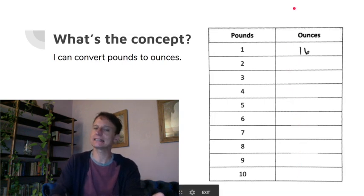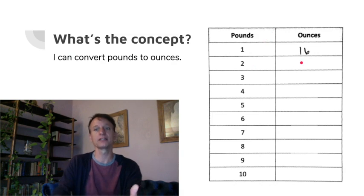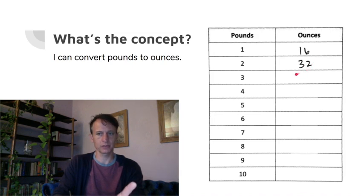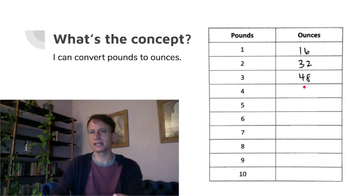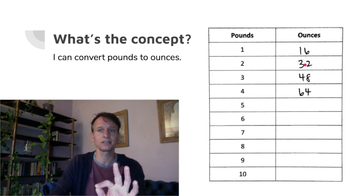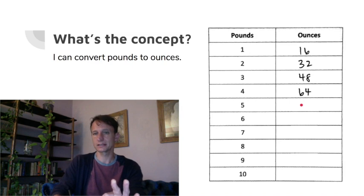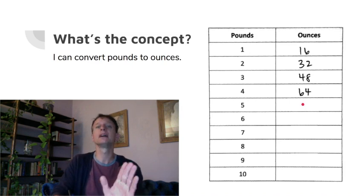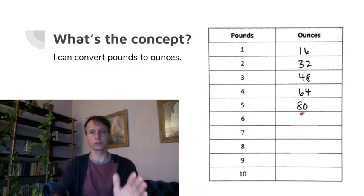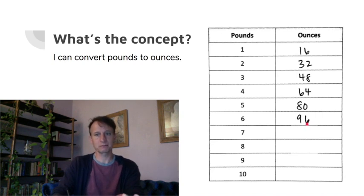Sixteen ounces make up one pound, and as we go through this chart we'll just be adding sixteen each time. Two pounds is thirty-two ounces. Three pounds is forty-eight ounces. Four pounds would be sixty-four ounces — or you can take thirty-two and double it to get sixty-four. Five pounds would be eighty ounces. Six pounds — adding sixteen to eighty — you get ninety-six. That one does have regrouping.